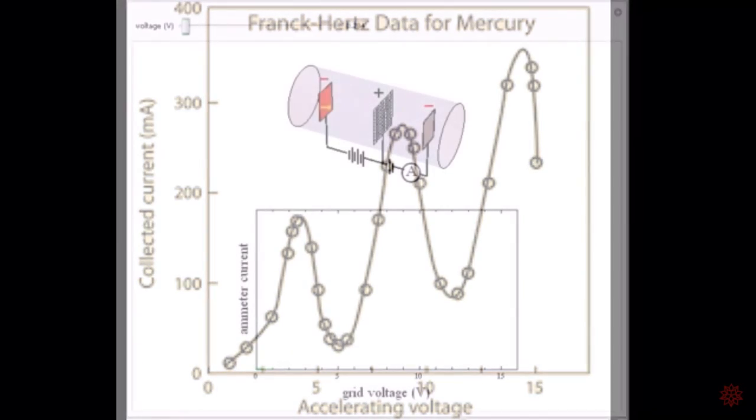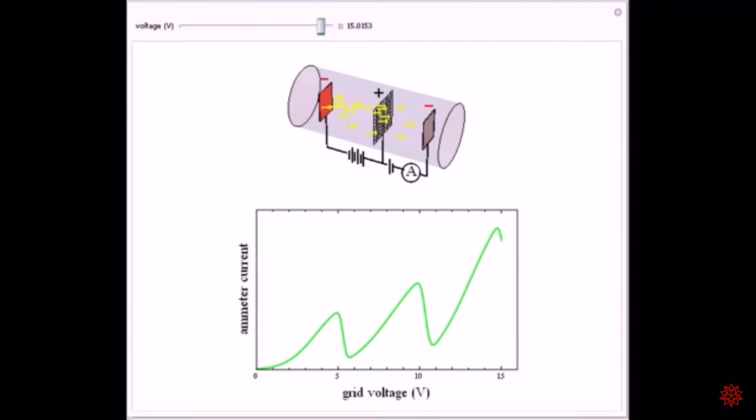They concluded the drop is attributed to inelastic collisions between the accelerated electrons and atomic electrons in the mercury atoms. The sudden onset suggests that the mercury electrons cannot accept energy until it reaches the threshold for elevating them to an excited state.